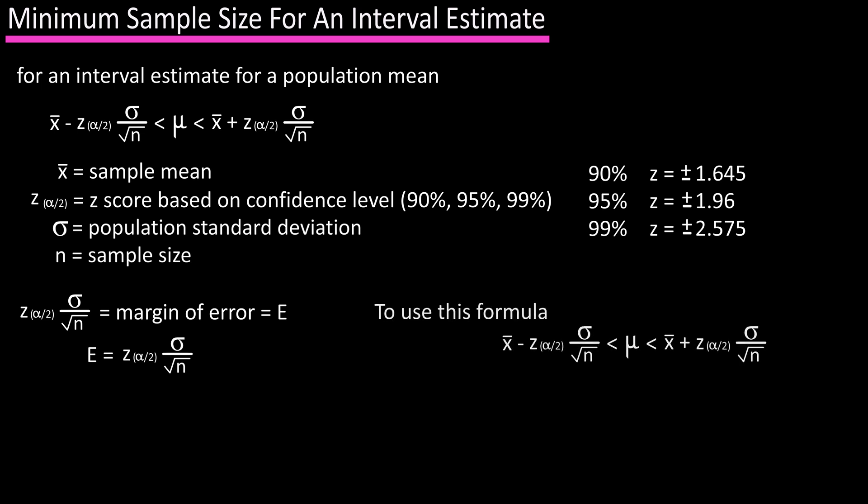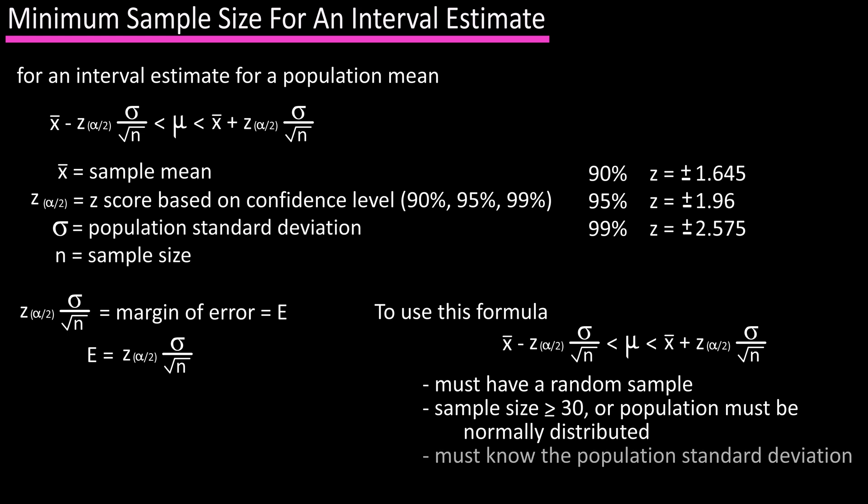To use this formula, we must have a random sample. The sample size must be greater than or equal to 30, or if the sample size is less than 30, the population must be normally distributed. We must also know the value of the population standard deviation.